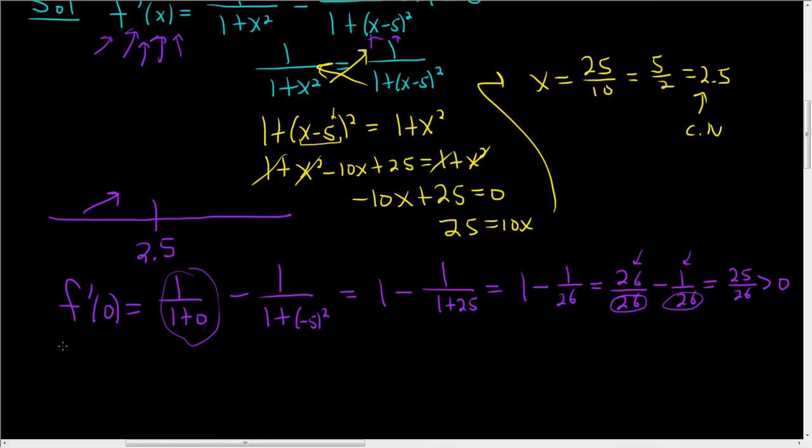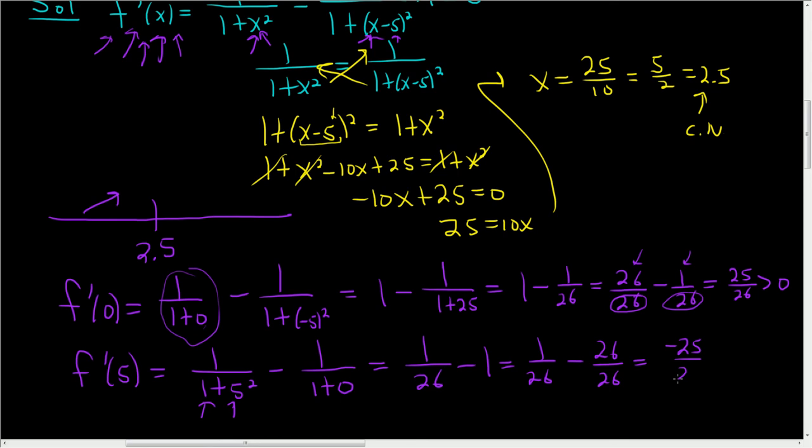Now we'll do the same thing, except we'll plug in... How about 5? So f prime of 5, this is 1 over 1 plus 5 squared, minus 1 over 1 plus... Here's the reason I picked 5, 5 minus 5 is 0. And this is 1 over 26, 25 plus 1 is 26, minus 1. This is 1 over 26, minus 26 over 26. And this is negative 25 over 26, which is less than 0, so it's decreasing.